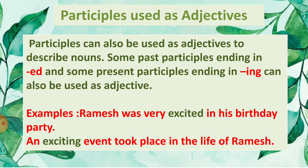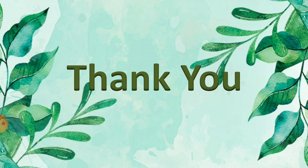Participles can also be used as adjectives to describe nouns. Past participles ending in -ed and present participles ending in -ing can both be used as adjectives. For example, 'Ramesh was very excited at his birthday party' and 'An exciting event took place in the life of Ramesh.' Here 'excited' and 'exciting' are both used as adjectives. I hope you have understood the different kinds of adjectives. That's all for today — thank you.